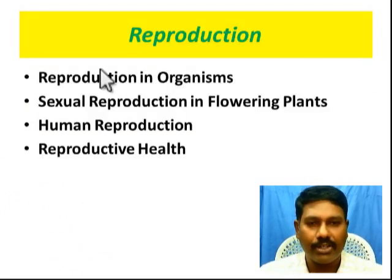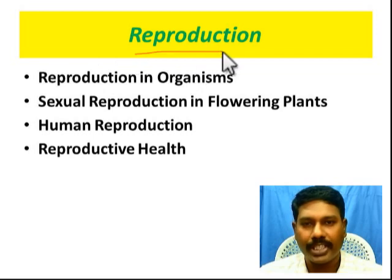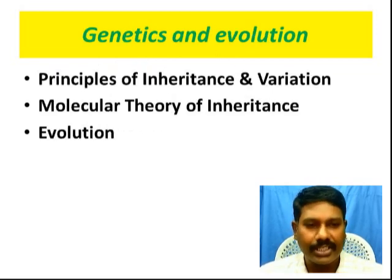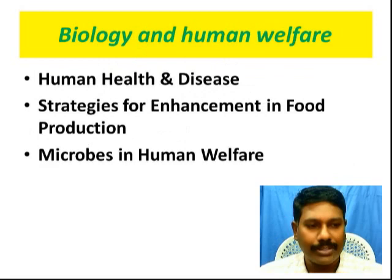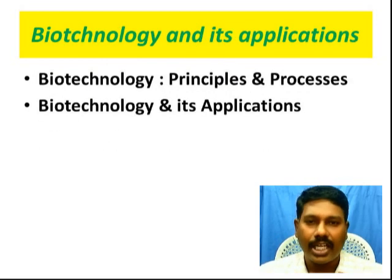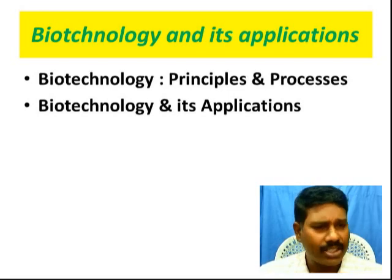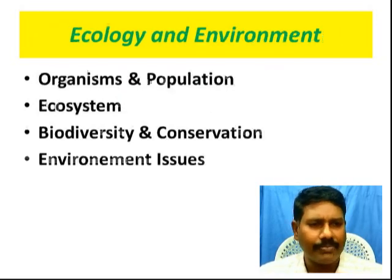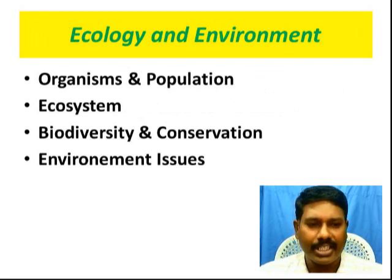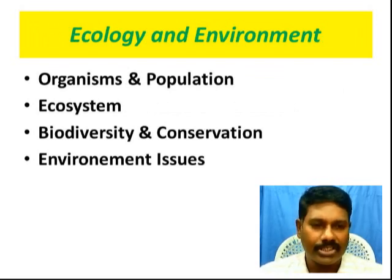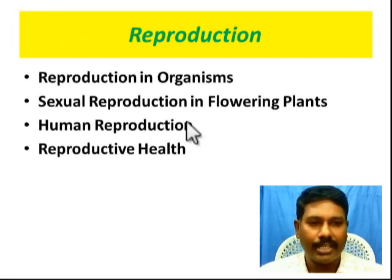Here, the 12th standard portions: the first unit is reproduction, the second unit is genetics and evolution, the third chapter is biology and human welfare, the fourth unit is biotechnology and its applications, and the last unit is ecology and environment. So reproduction, ecology, and genetics and evolution - that is a lot, and that is what we need to allocate.